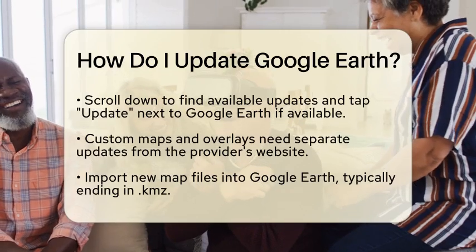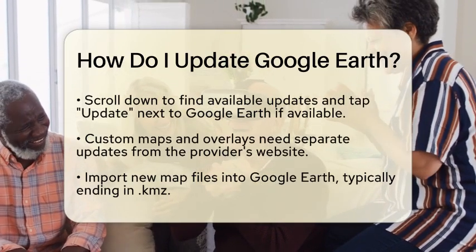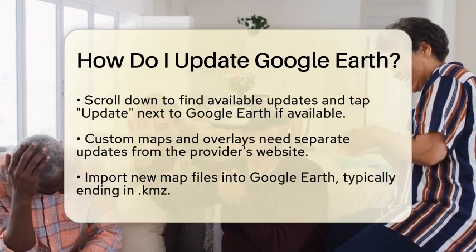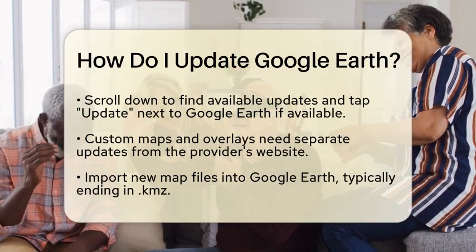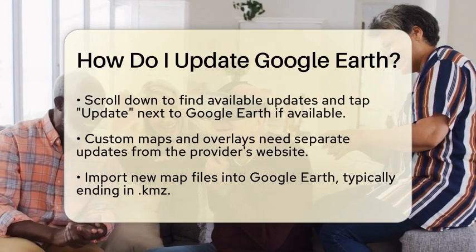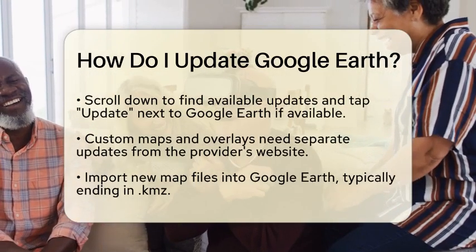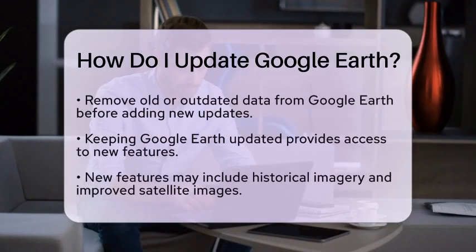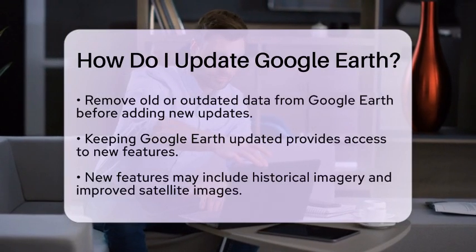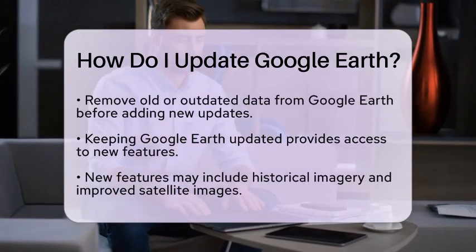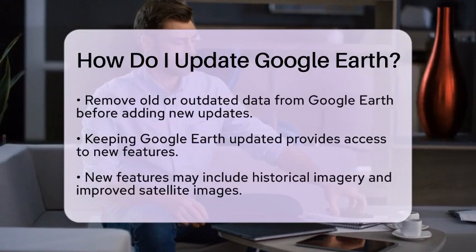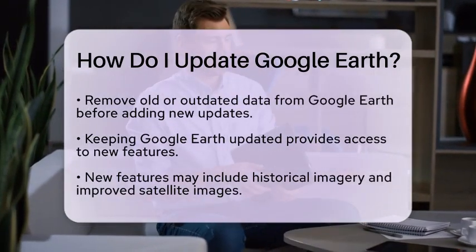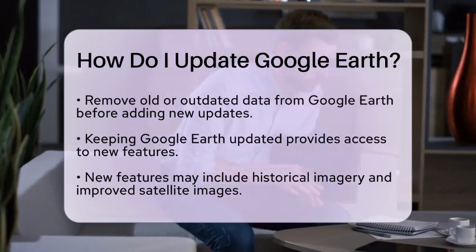For those who enjoy using custom maps or overlays in Google Earth, you will want to update these separately. You can download the latest map files from the provider's website. Once you have the new files, import them into Google Earth by opening the file, which is usually a file type ending in KMZ. Before you add new maps or updates, it is a good practice to remove any old or outdated data from your Google Earth application. This helps keep your interface clean and prevents any potential conflicts with the new data.